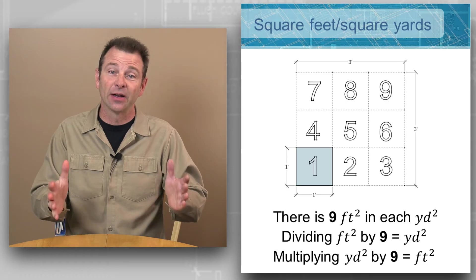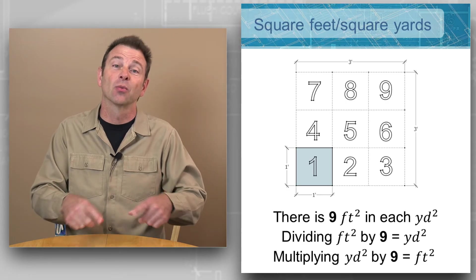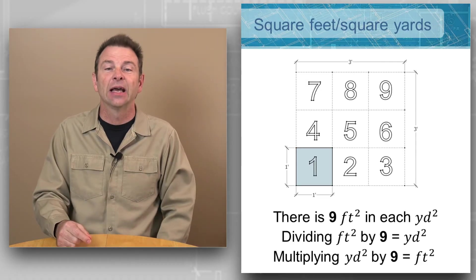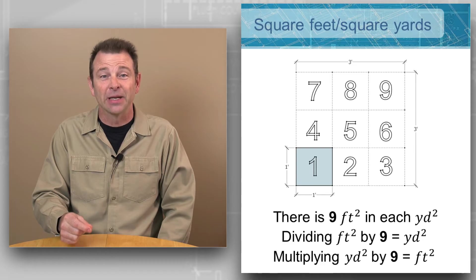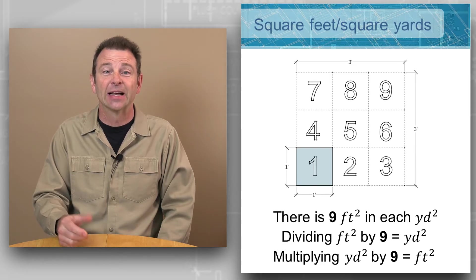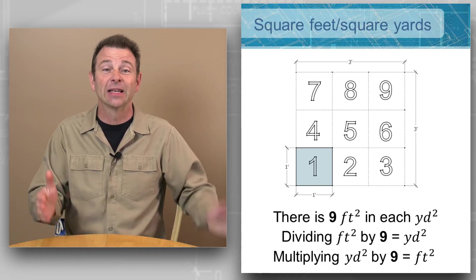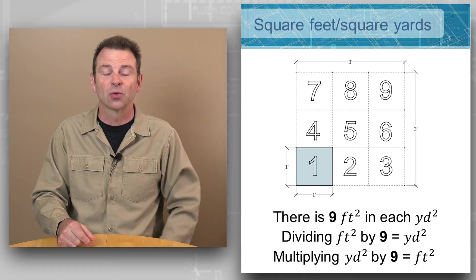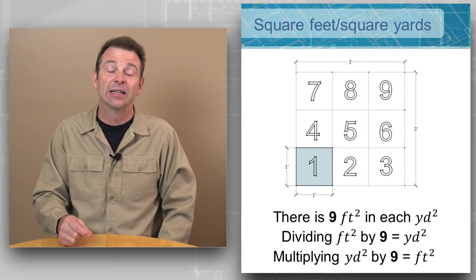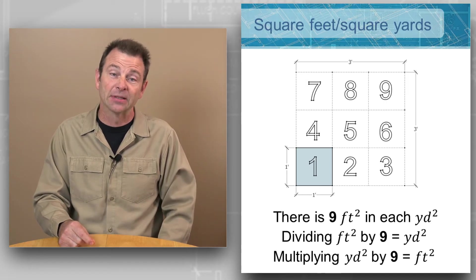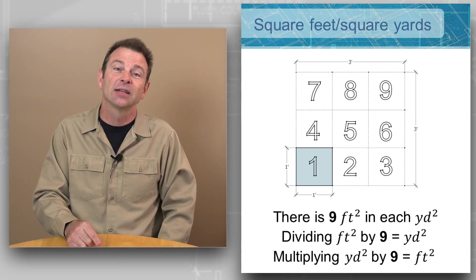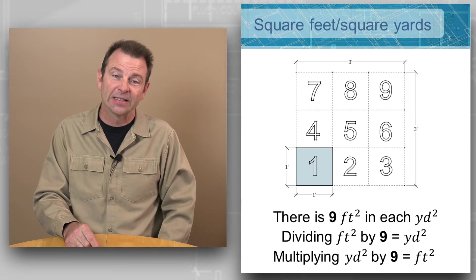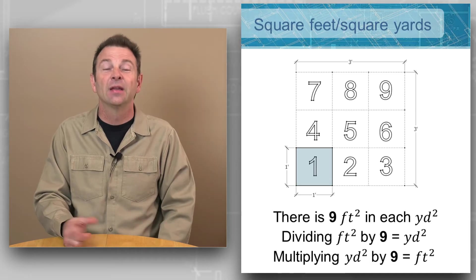We're adding another dimension to it — we're working on area, so we're working in two dimensions. And so this yard is going to be three feet by three feet. That's the measurement that defines the area of a square yard. It just so happens that there are nine square feet in one square yard.